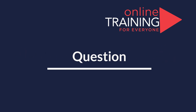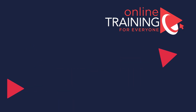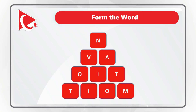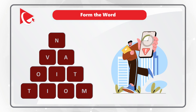One of the very hard challenges is forming words using a certain number of letters of the English alphabet. In this question you are presented with 10 letters — N, V, A, O, I, T, T, I, O, M — and you need to form a word using all the letters only once. Give yourself 20 to 30 seconds. As you might have guessed, the word is 'motivation.'